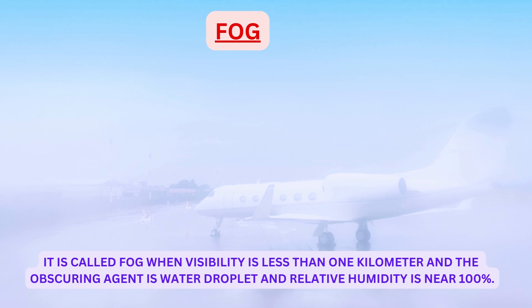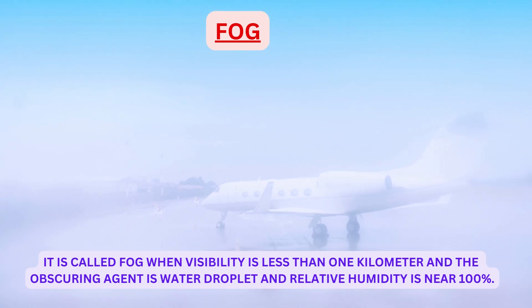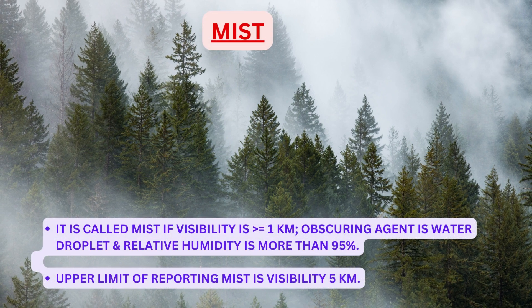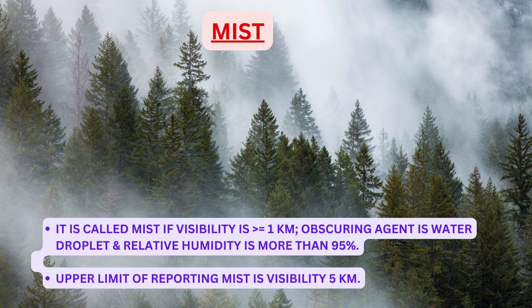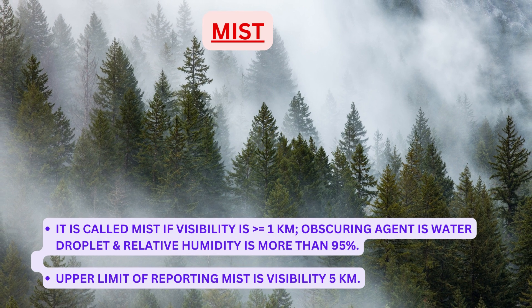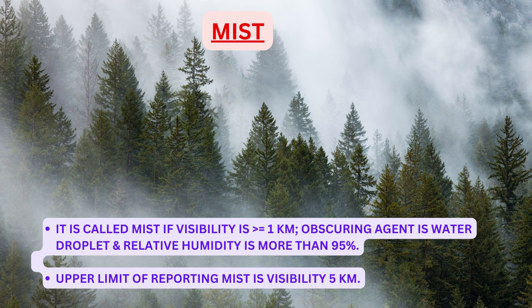It is called fog when visibility is less than one kilometer, the obscuring agent is water droplets, and relative humidity is near 100%. It is called mist if visibility is one kilometer or more, the obscuring agent is water droplets, and relative humidity is more than 95%. The upper limit of reporting mist is a visibility of five kilometers.